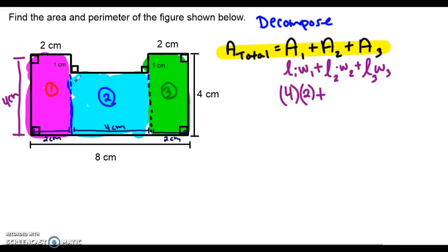Now for the width of Rectangle 2, we look across at the left side of Rectangle 1, which is 4 centimeters. This small piece of Rectangle 1 is 1 centimeter, so the width of Rectangle 2 must be 3 centimeters, because 3 plus 1 gives us 4 altogether. So the length of Rectangle 2 is 4 centimeters and the width is 3 centimeters.